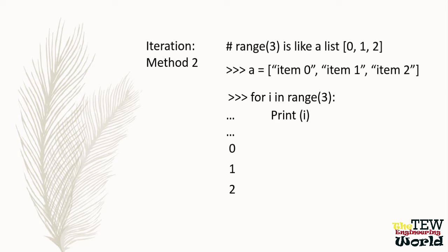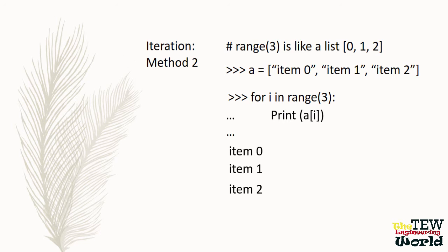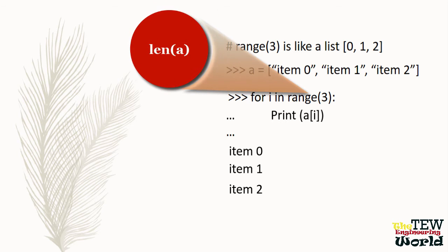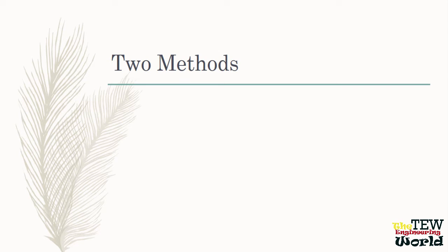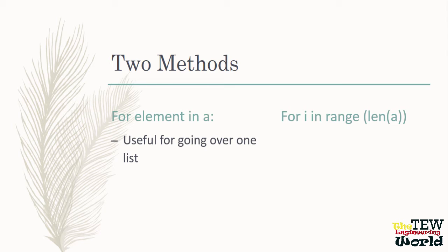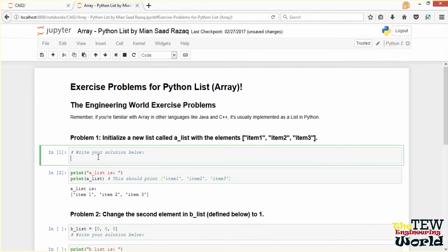Using this, we can iterate over each element in any list by index. With the same list A containing item 0, item 1, and item 2, if we do for I in range of 3, print A square bracket I, I would go from 0 to 1 to 2, printing item 0, item 1, and item 2. Instead of writing 3, we can replace it with len(A) because the length of this list is 3. These two methods of list iteration are useful in different situations — for example, the for-I-in-range syntax allows you to iterate over multiple lists at the same time using the same index.